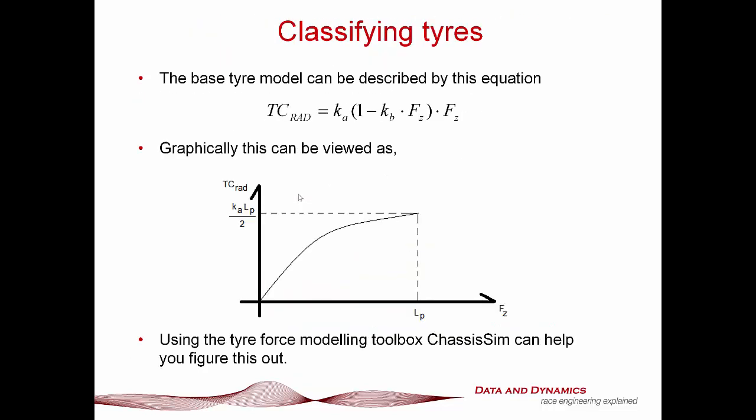Moving on — classifying tires. The base tire model is your traction circle radius: your initial coefficient of friction, one minus KB times Fz. Graphically, this can be viewed as follows. The great thing is that when you've got a tri-axis G-meter plus damper sensors, that opens up the ability to reverse engineer this from data, and that's where the ChassisSim Tire Force Modeling Toolbox comes in. I don't just say this because I have a vested financial interest — I say this because this has saved my neck on more occasions than I care to remember.